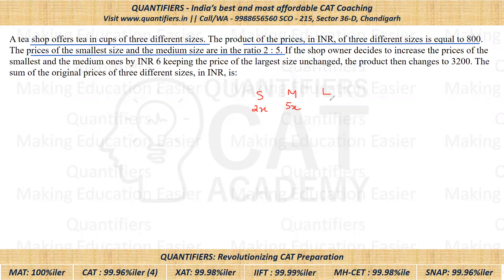For the largest size unchanged, the smallest and medium, it is also given that their product is equal to 800. So the product of these is equal to 800.